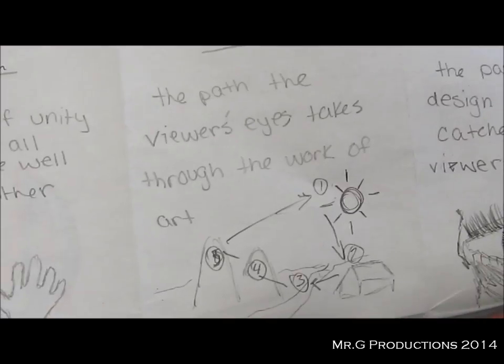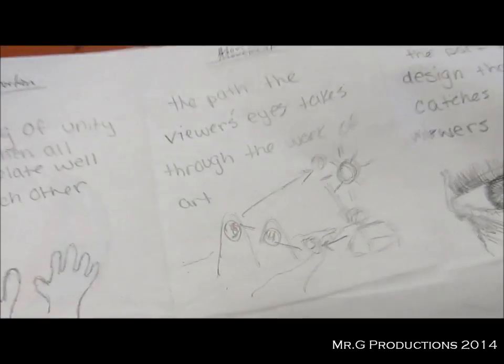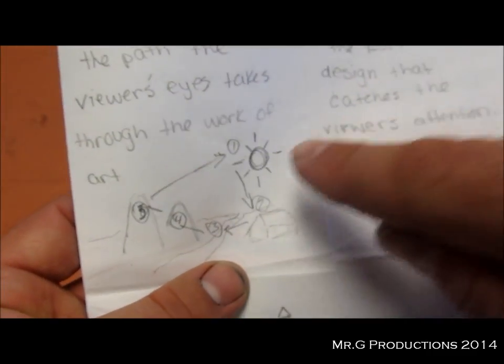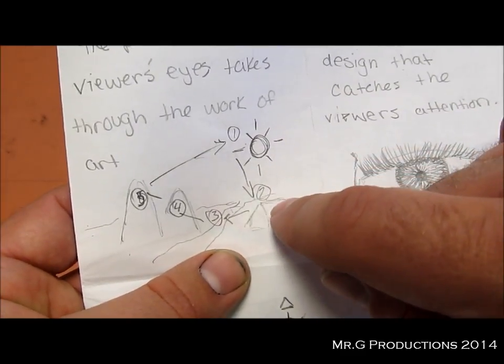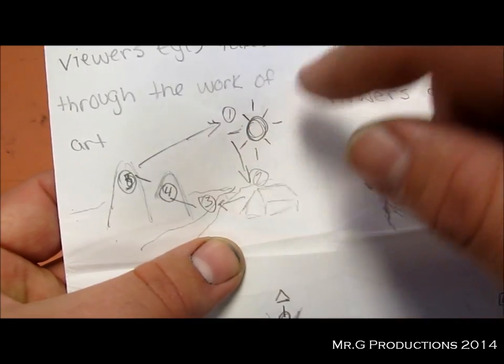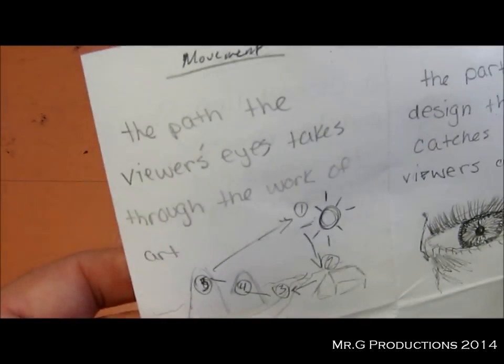All right, movement. The path of viewer's eye takes through the work of art. So how do you look at the work of art? For this one, I've got a fold in half so it holds a little better. So on this one, the first thing that you look at is the sun. And then, as it travels around from the house, across the river, over the mountains, to the larger mountain, back to the sun. So it actually has the trail of movement illustrated in that definition.